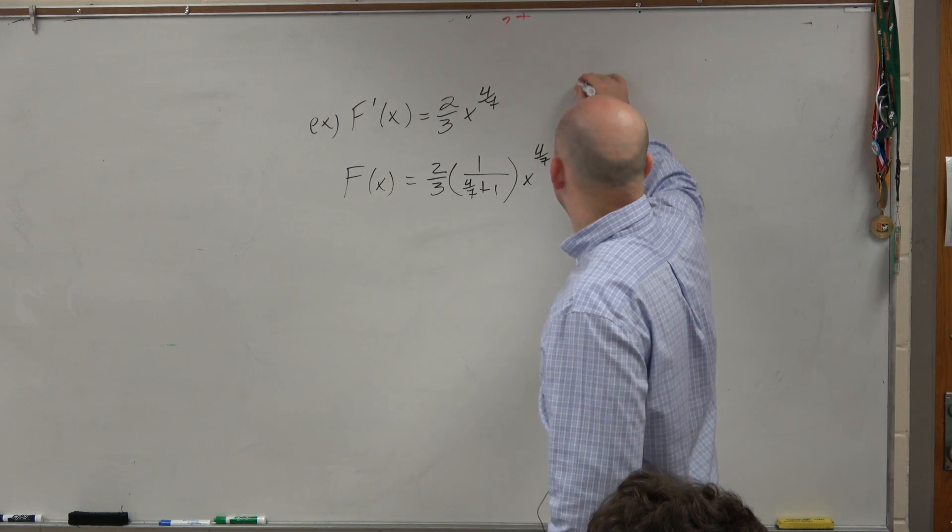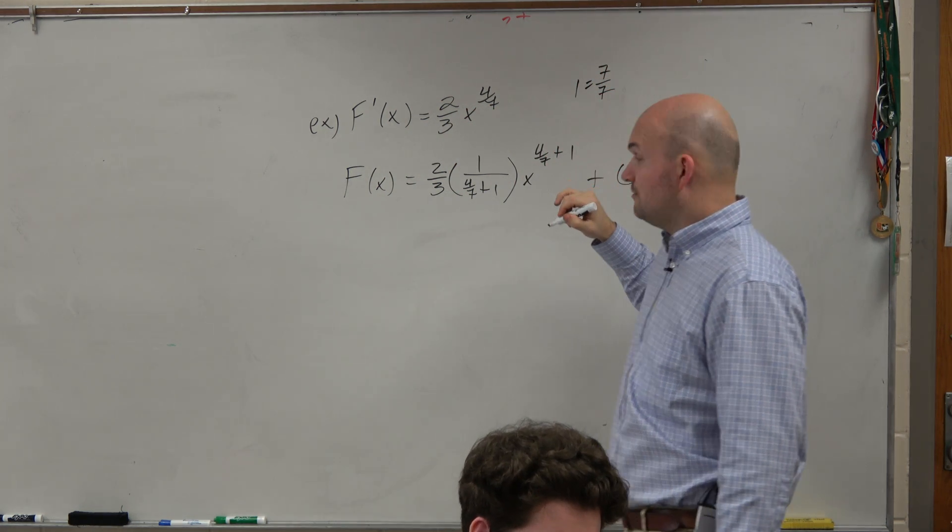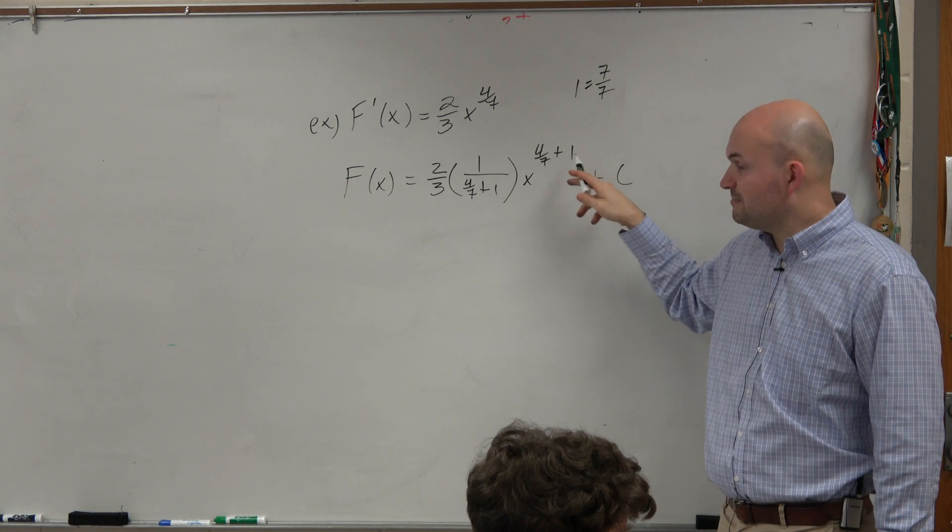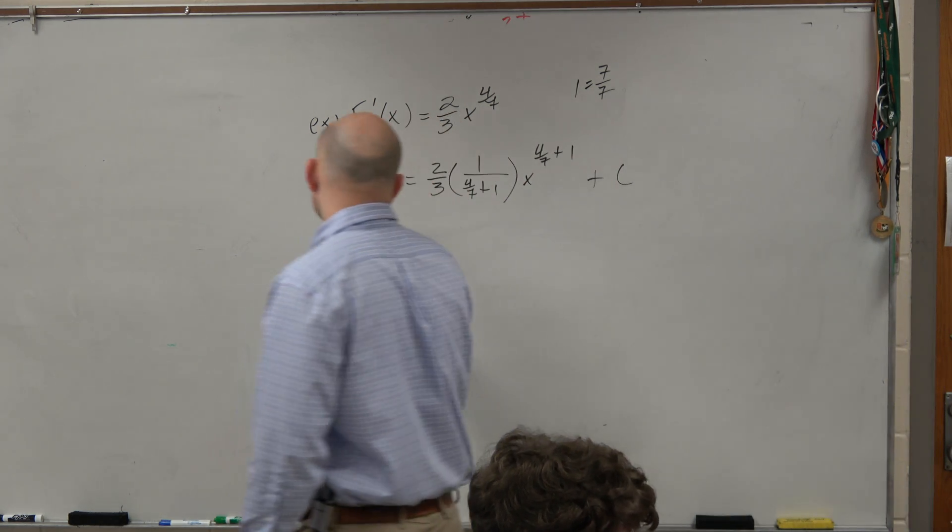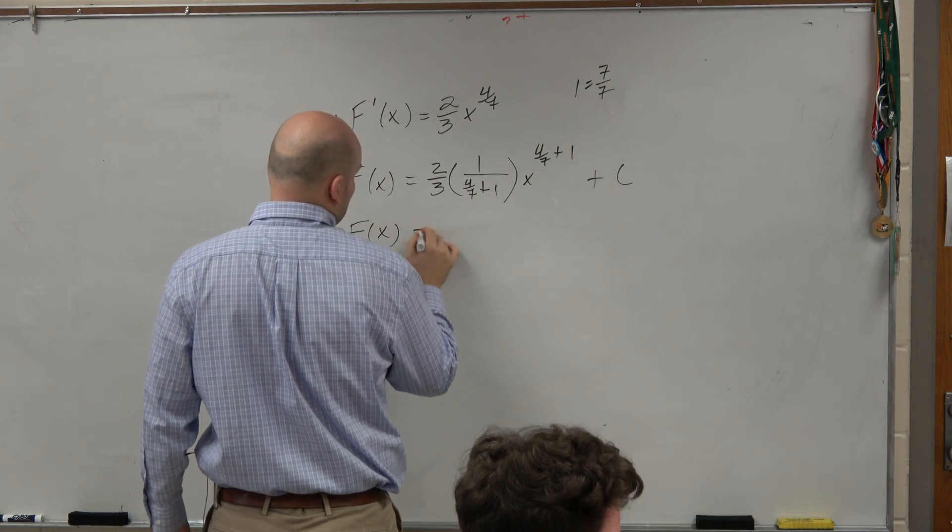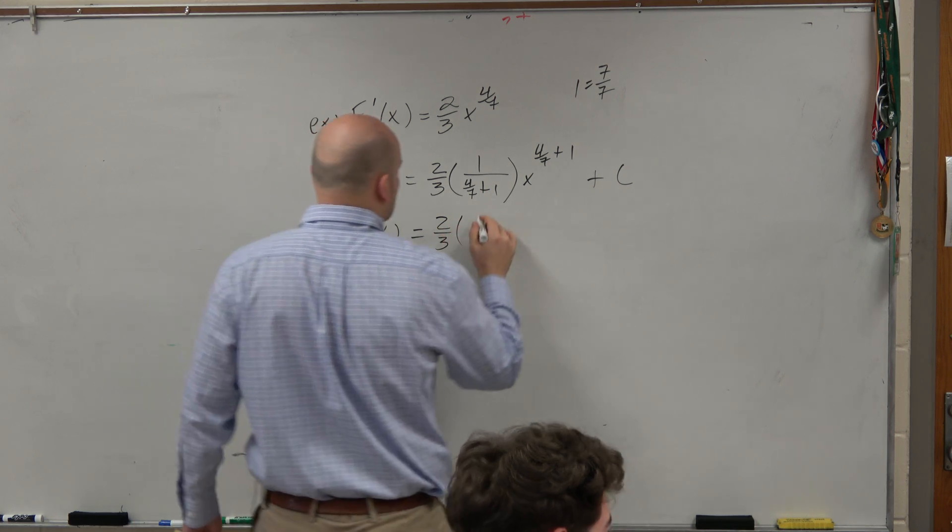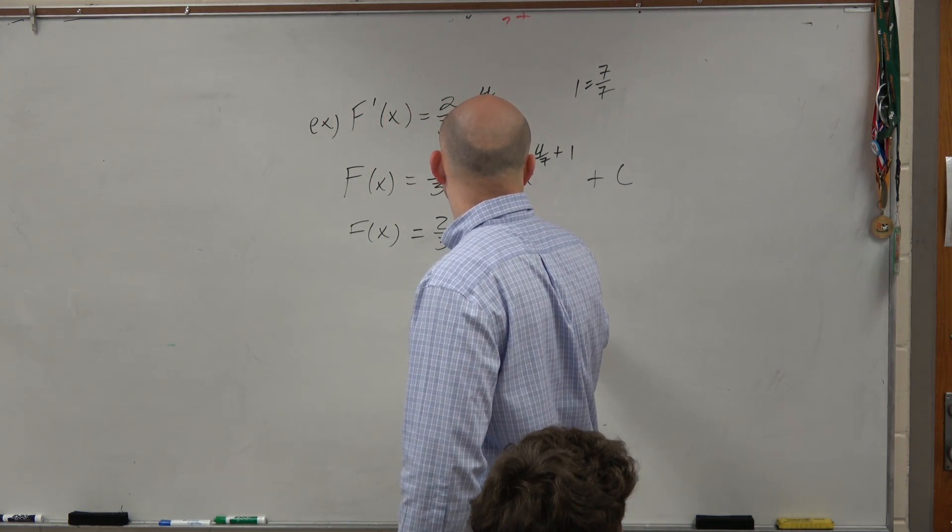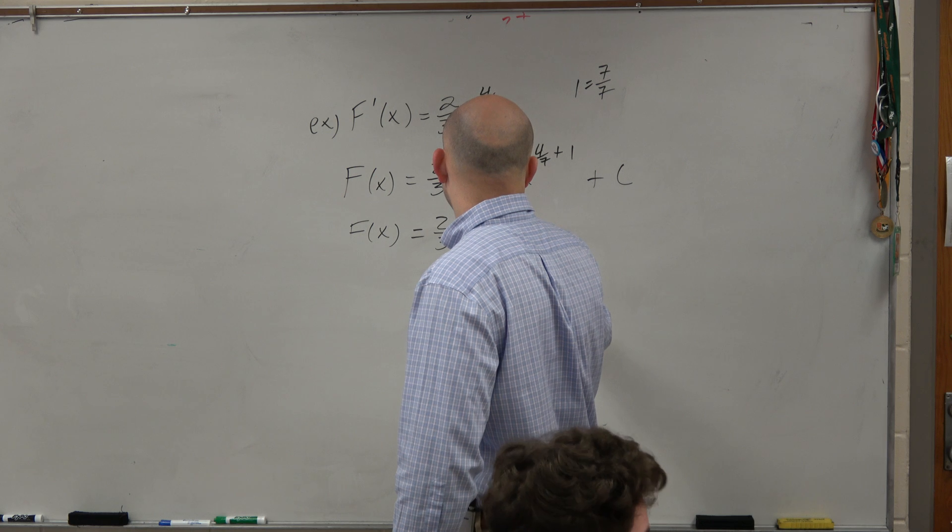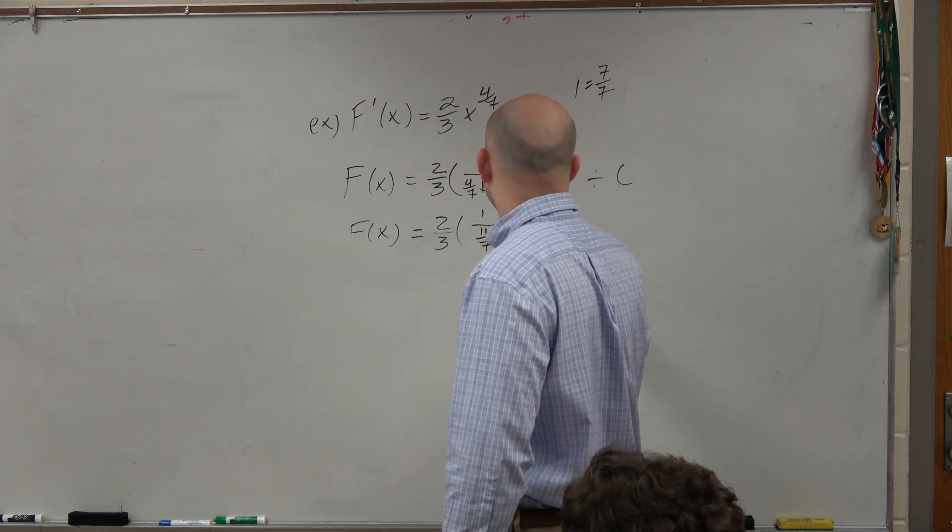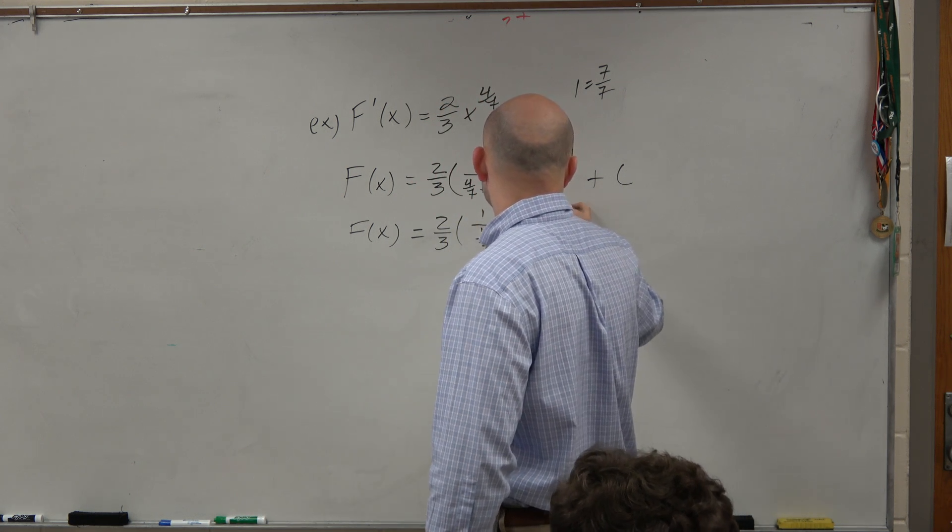A couple things. We know that 1 is equal to 7 over 7, right? And I want to use 7 over 7 to keep my common denominators. So let's kind of do some math here. So f of x equals 2 thirds times 1 over, let's see, that could be 11 sevenths times x to the 11 sevenths.